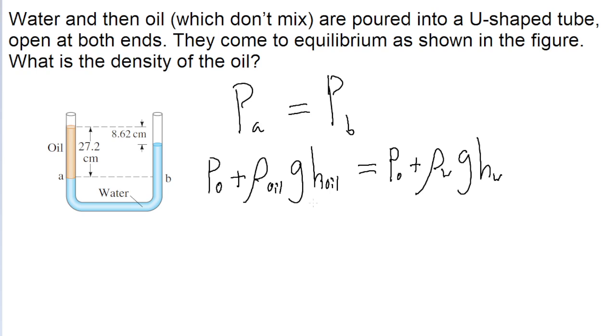So this is our equation, and there are a few things we can do to simplify it. Since both sides of the equation have P naught, the atmospheric pressure, we can cancel those out. Then both sides of the equation have g, the gravitational acceleration, so those can cancel out, since it's in the only term left after we get rid of the atmospheric pressures.